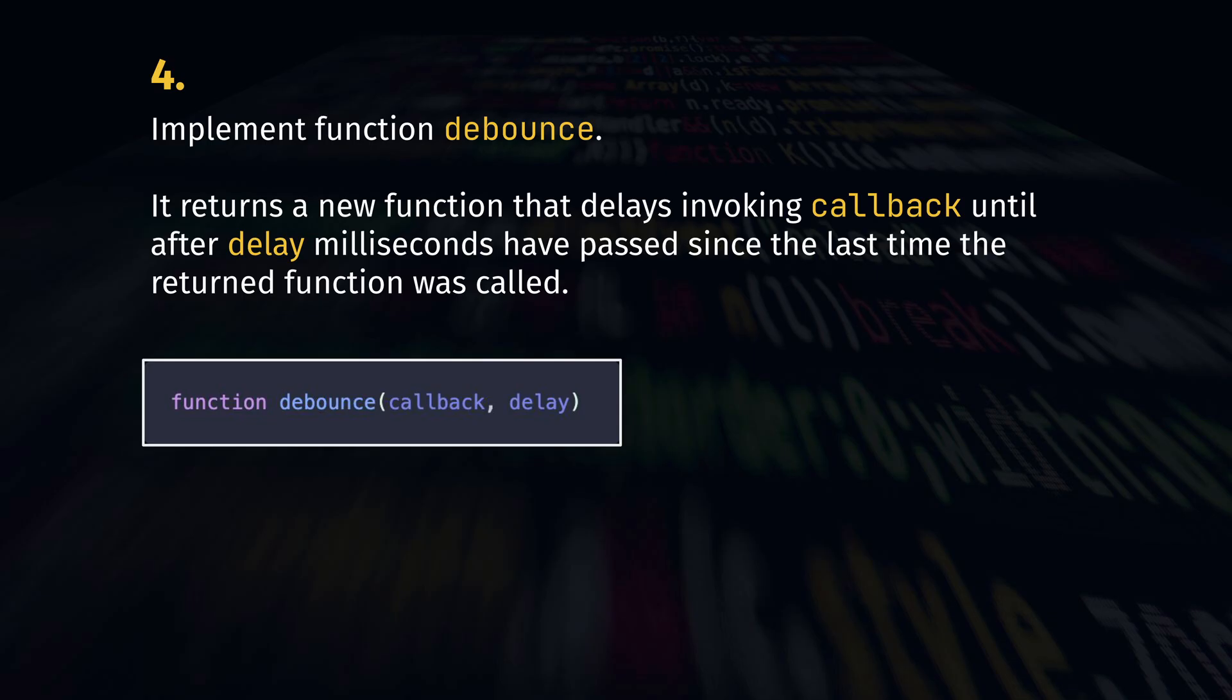So if we call a debounced function all the time, our callback is never invoked. But if you stop for the specified time, the last invocation will trigger the callback with the arguments you passed.